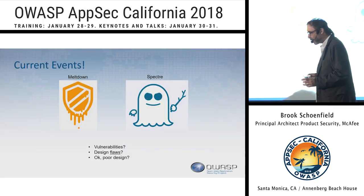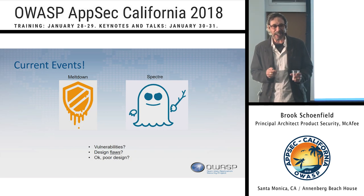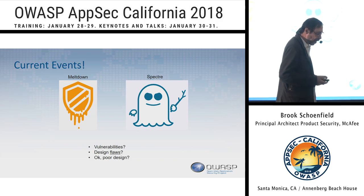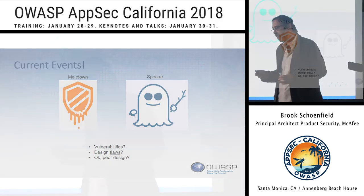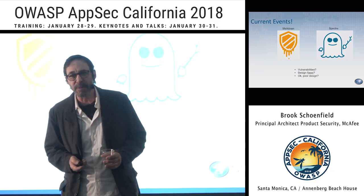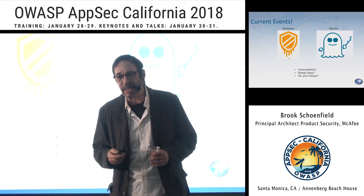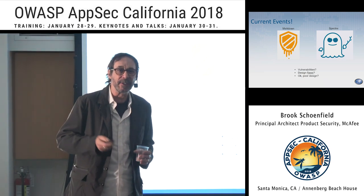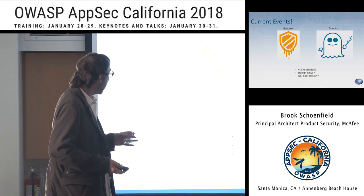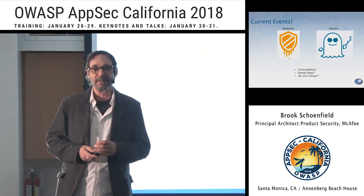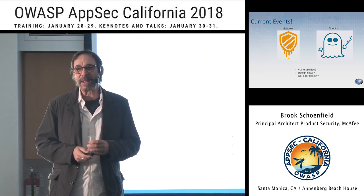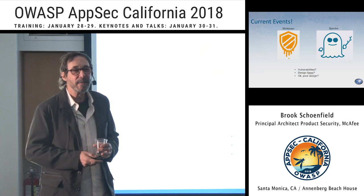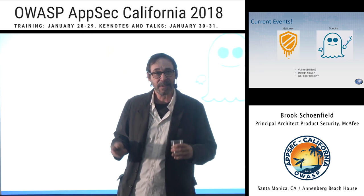Let's talk about Meltdown and Spectre. I was involved fairly early on as it began to break, because McAfee wanted to respond. I believe we were the first security company to make an analysis — I wrote the first draft. Who would say these are vulnerabilities? Spectre and Meltdown? Who thinks they're design flaws? That was the big headline — 'design flaw.' Who in this room thinks Intel was hiding this for years?